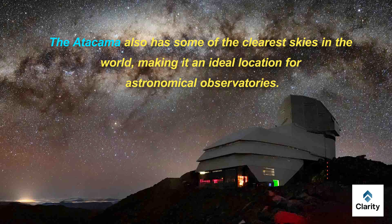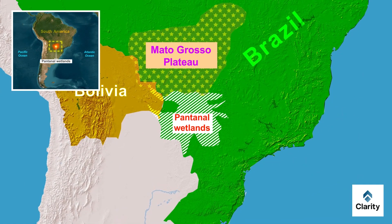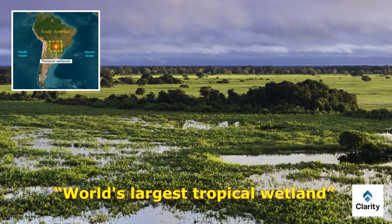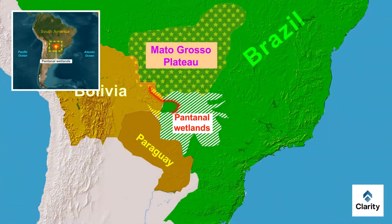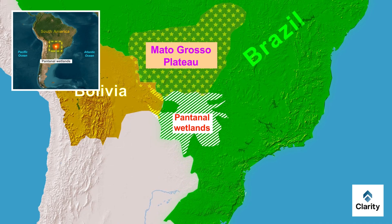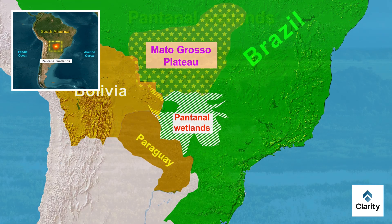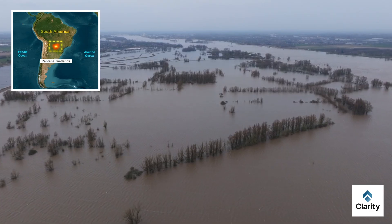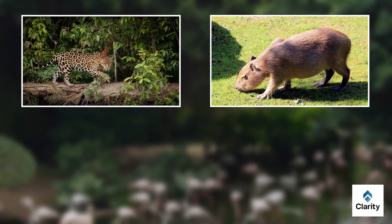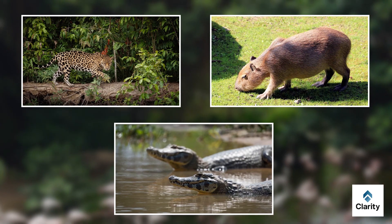South America also has great wetlands. The Pantanal is the most famous among them — it is the largest tropical wetland in the world, covering an area of about 150,000 square kilometers. The Pantanal lies mostly in Brazil, but also spreads into Bolivia and Paraguay. Every rainy season it floods widely, creating a rich habitat for wildlife. It supports hundreds of bird species, jaguars, capybaras, caimans and a large variety of fish.